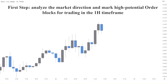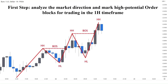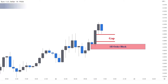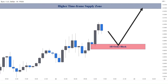This strategy has 2 steps. In the first step, I analyze the market direction and mark high potential order blocks for trading in the 1-hour time frame. For example, here we can clearly see that demand is in control. The market has broken the structure to the upside with inefficiency, leaving a perfect order block demand zone behind. Also, we have enough room for the price to go higher before reaching the higher time frame supply zone.